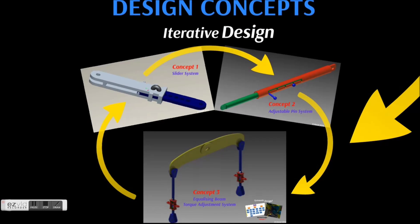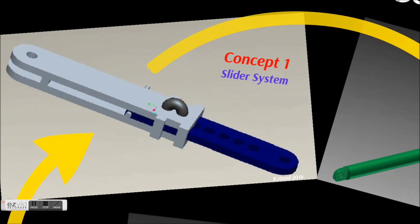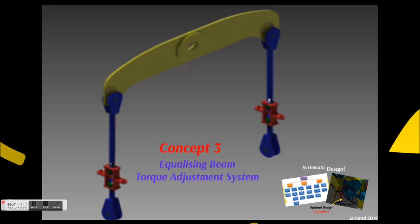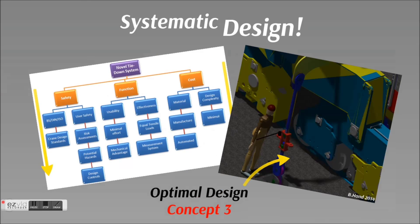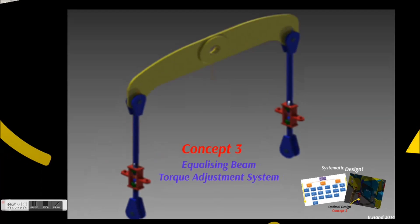I started my design process by firstly generating possible concepts. This included a slider system, adjustment pin system, and an equalizing system. Through the use of a systematic design approach, it was found that the equalizing system was best suited to the design criteria.